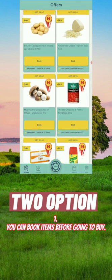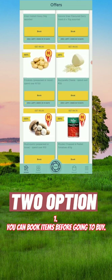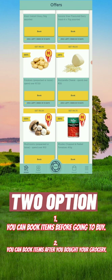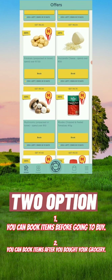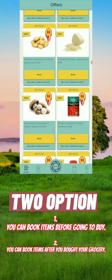Going down and down. Now the other option is you can do it after you bought the grocery, especially if you are not sure what you are going to buy, because there are people who just go and buy. You can do it before or after.